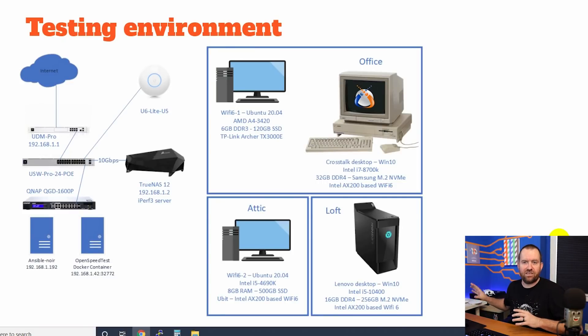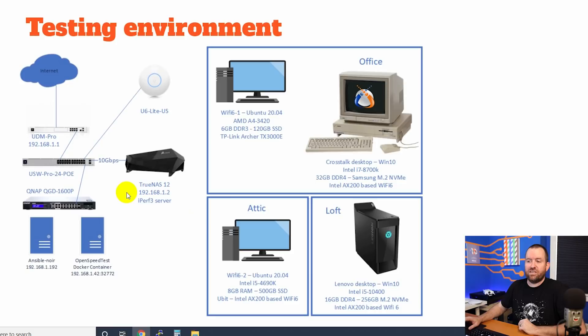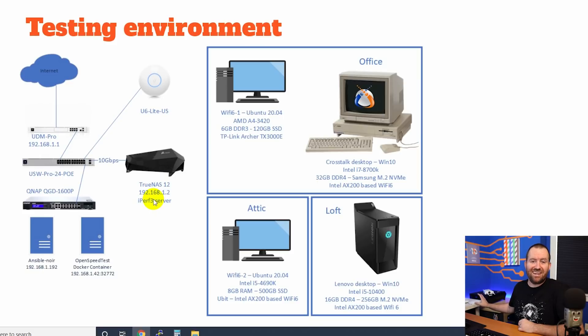So there we have the five access points that I tested for this video. Let's take a look at the testing methodology. I essentially ran three different types of tests against all of these access points and distilled those tests down to a single average megabits per second. The internet comes into a Ubiquiti UDM Pro, which then goes out to a USW Pro 24-port switch connected to each of the access points in turn. Each access point was placed on the wall in the exact same location, and all clients connected from the exact same locations. The first set of tests were simple iPerf tests running against a TrueNAS server that is 10-gigabit connected to the network, so it wouldn't be a bottleneck.